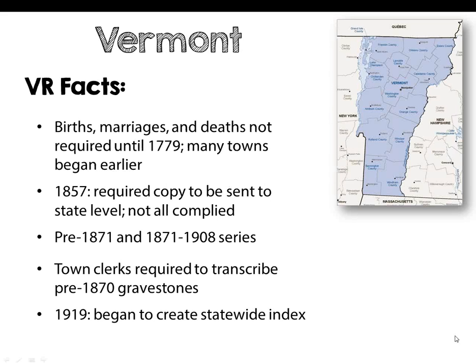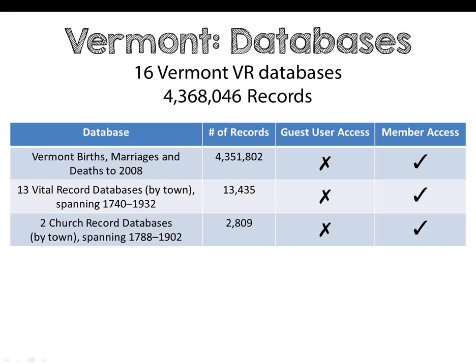The last state we're going to chat about is the great state of Vermont. This northerly state has recordings that generally began as early as the 1770s, though many earlier settled towns did not record vital records from their earliest settlement. In 1857, Vermont required that a copy of all births, marriages, and deaths should be sent to the state, though this was not always followed. The two earliest microfilm series of Vermont records are the pre-1871 series and the 1871 to 1908 series. Gravestones prior to 1870 were transcribed to compensate for the poor return of death records. In 1919, the state of Vermont began a statewide index to record all vital records present and past. We offer 16 vital record databases on AmericanAncestors for Vermont including over 4.3 million records.